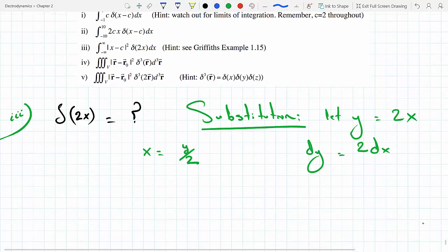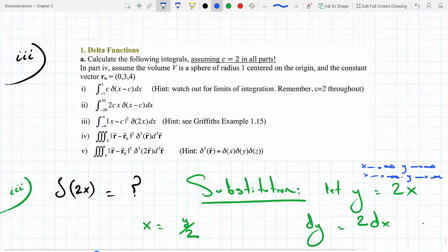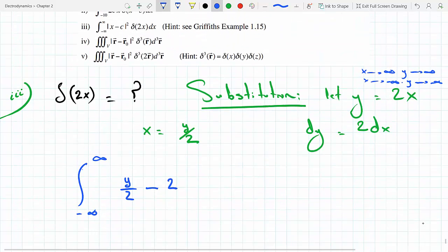Before you split the integral, the bounds don't change because if x goes to infinity so does y, and if x goes to minus infinity y goes to minus infinity. So then x is y over 2. We'll do the substitution—c is 2 given, so this becomes minus 2 squared.